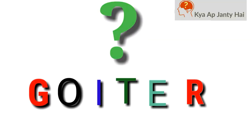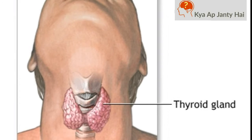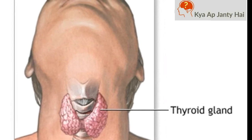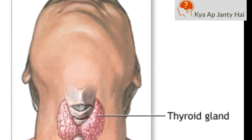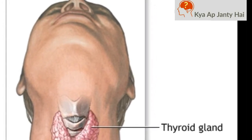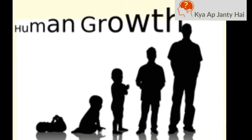Today we will learn what is goiter. Goiter is a condition where a thyroid gland, located in the neck, becomes enlarged. This gland is situated in front of the windpipe and it is responsible for producing and secreting hormones.